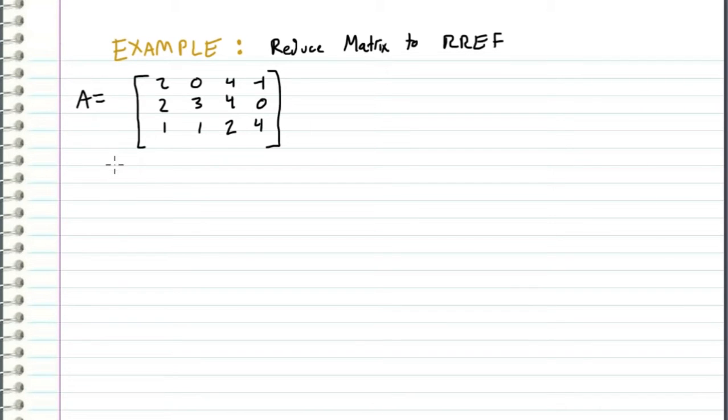In this video, I will be going over an example on how to reduce a matrix to its reduced row echelon form. So let's take this matrix A, as I have defined right here, and we want to reduce this using row operations to a reduced row echelon form.